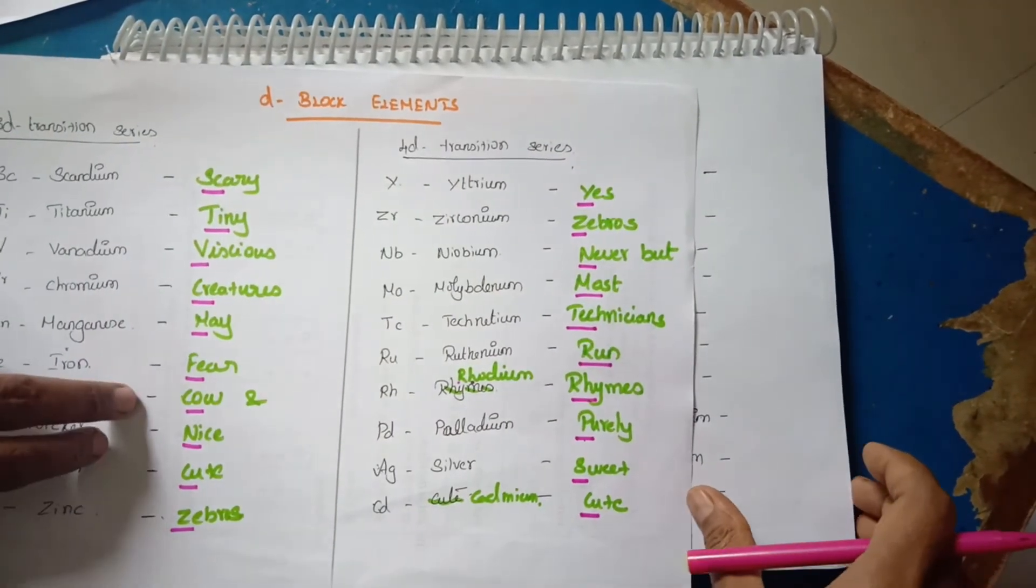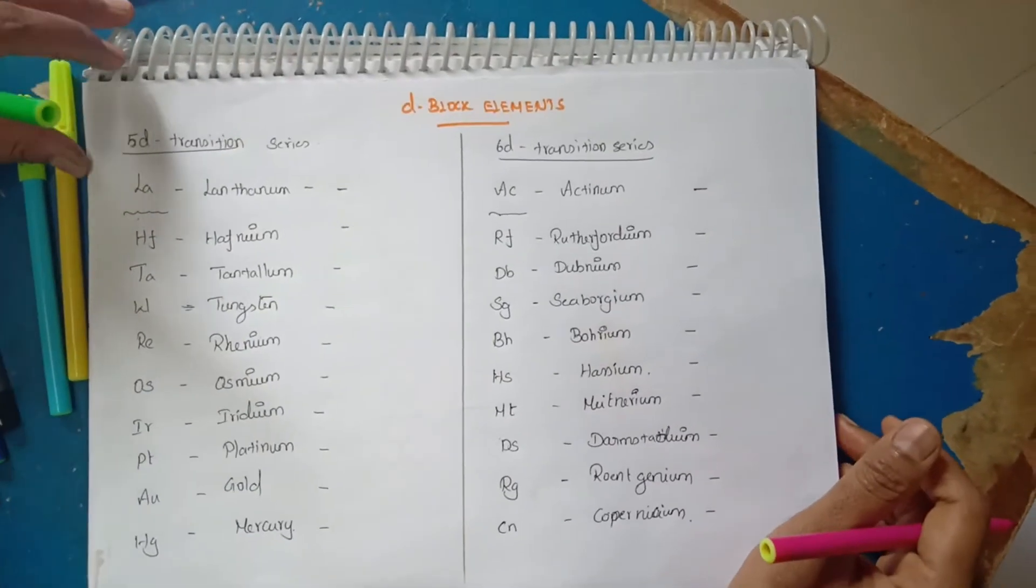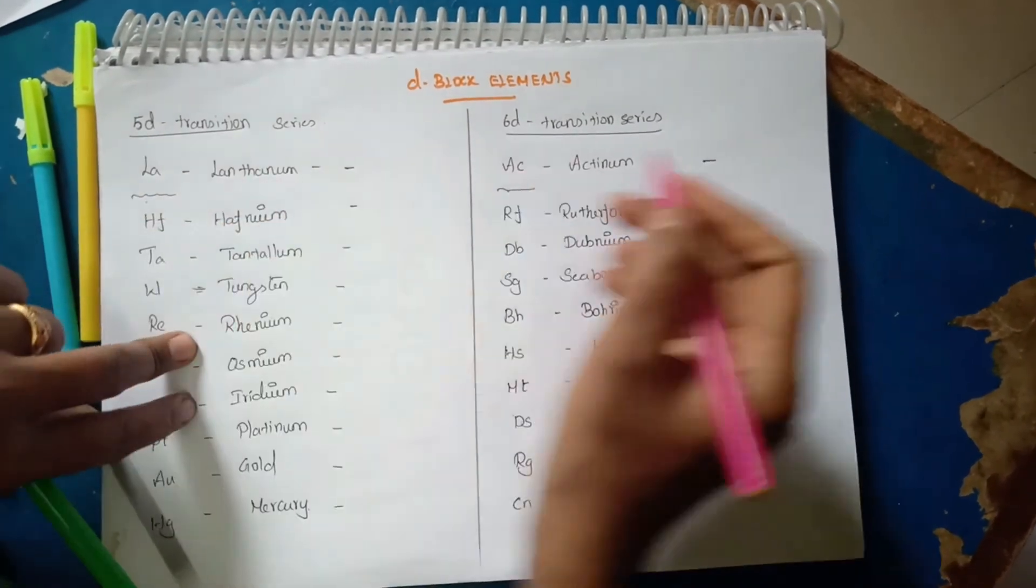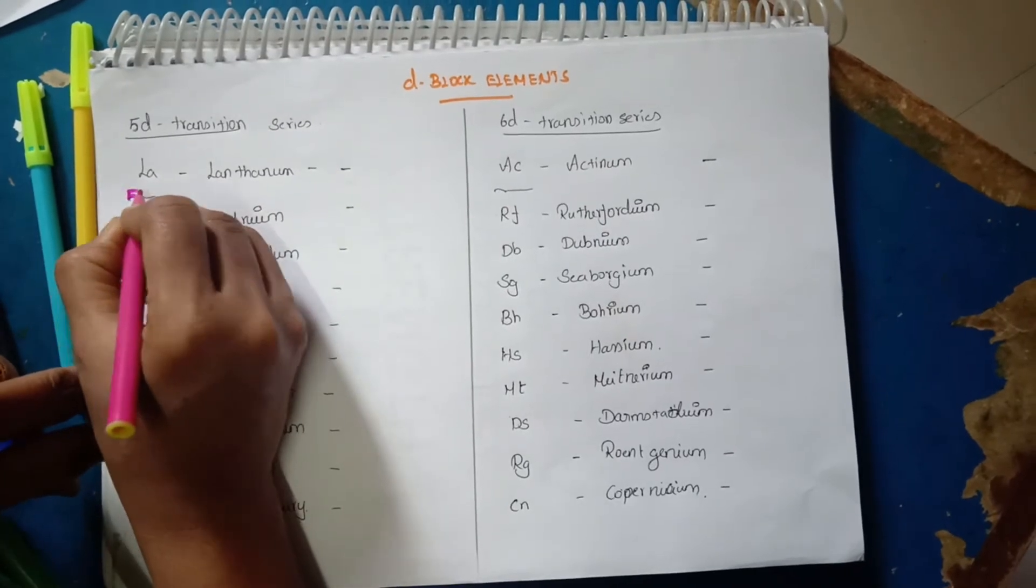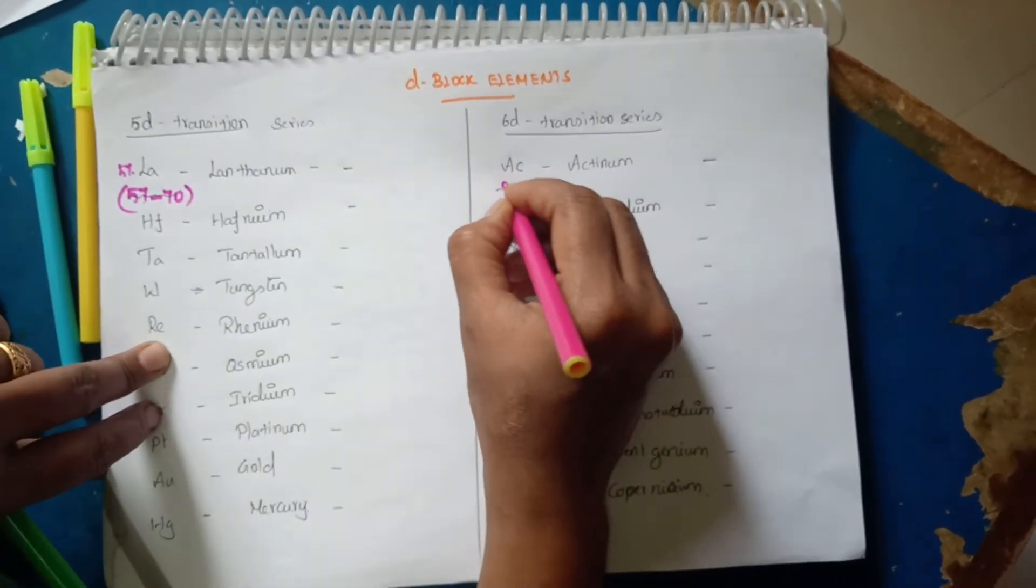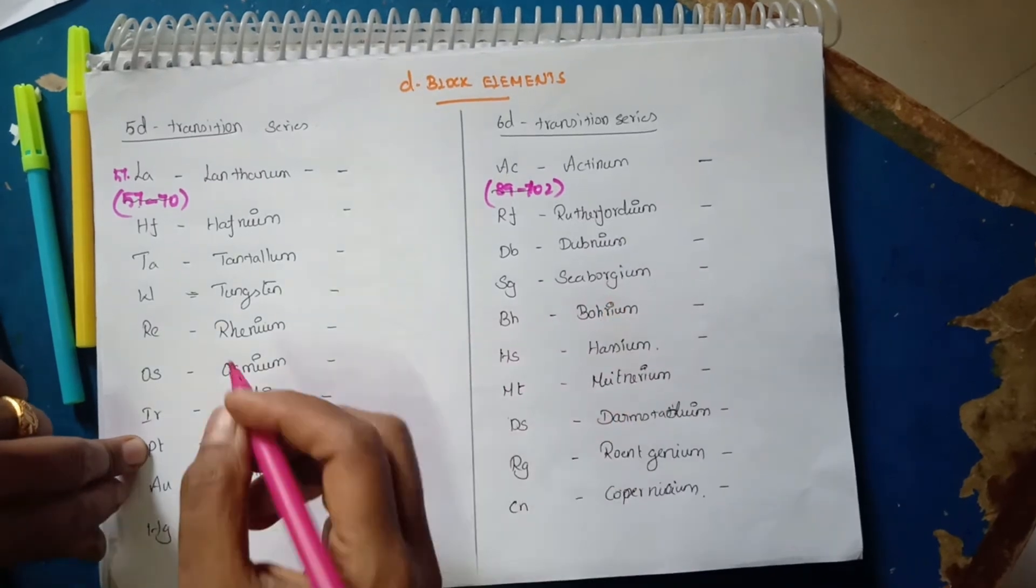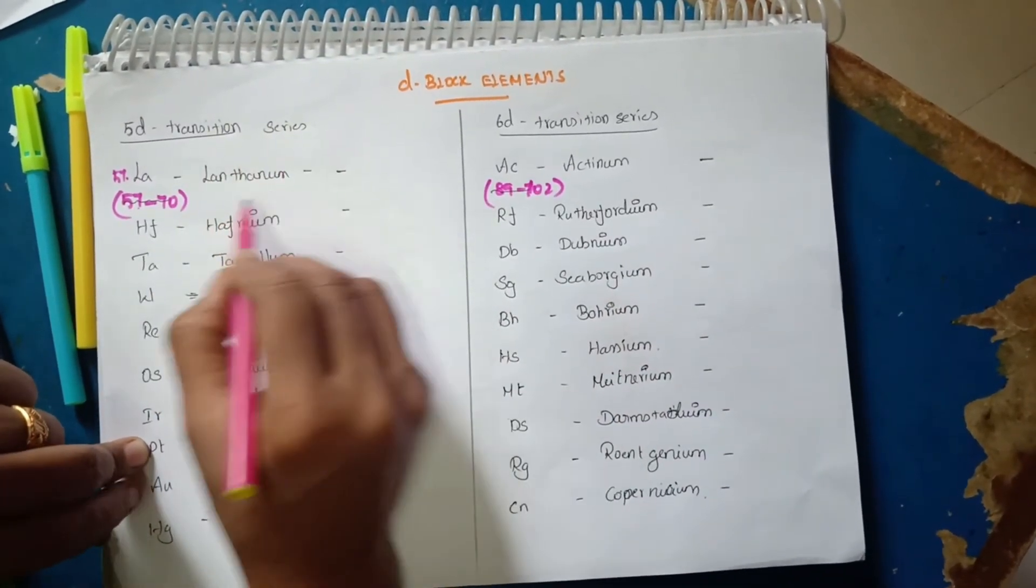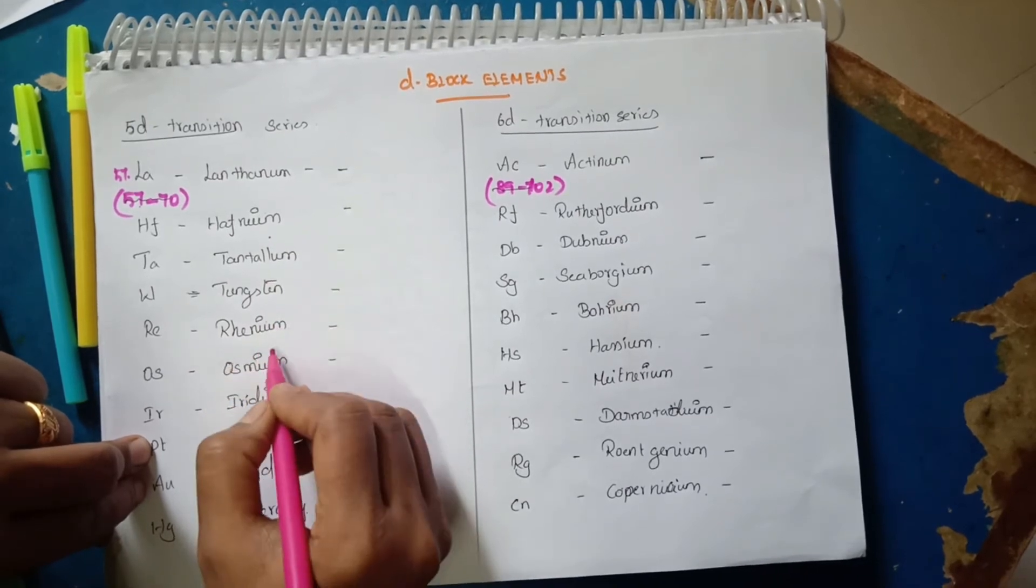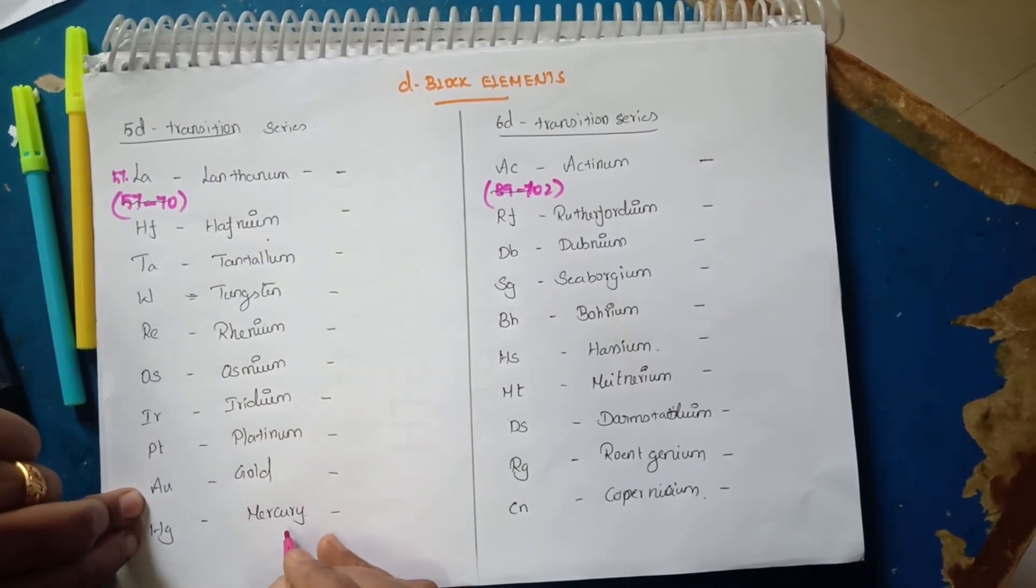Next is the 5D transition series and 6D transition series. The 5D transition series includes Lanthanides and the 6D includes Actinides. In the 5D transition series: Lanthanum, Hafnium, Tantalum, Tungsten, Rhenium, Osmium, Iridium, Platinum, Gold, Mercury.